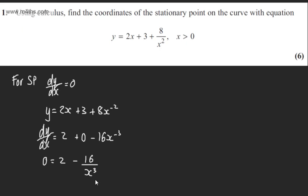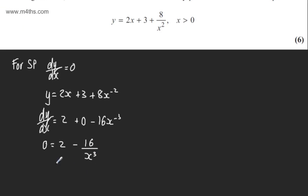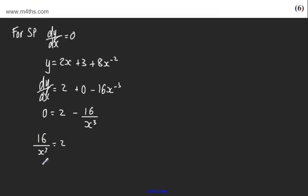If we look at the equation in this form, it's going to be easier to solve. So we can say 16 over x cubed equals 2. Rearranging, dividing both sides by 2 and multiplying both sides by x cubed, we can see 8 equals x cubed.